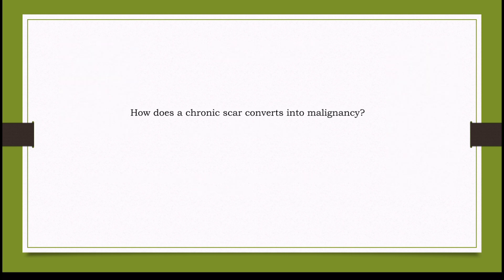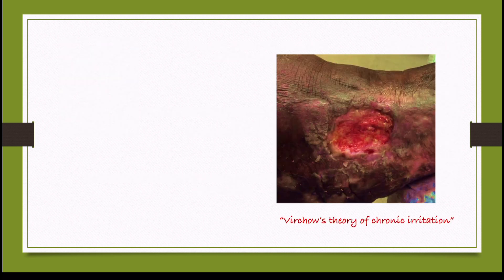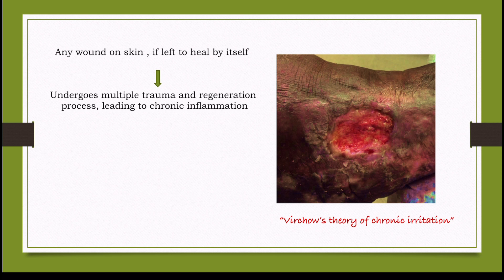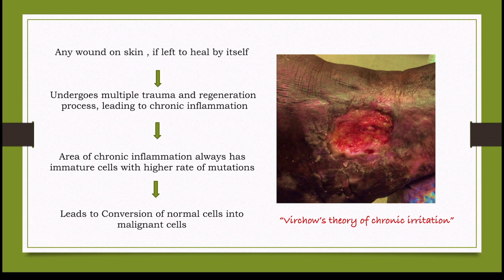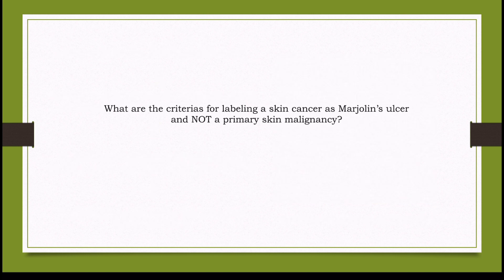How does a chronic scar convert into malignancy? Any wound on skin, if left to heal by itself, undergoes multiple cycles of trauma and regeneration, leading to chronic inflammation. Areas of chronic inflammation always have immature cells with higher rates of mutations, which leads to chances of conversion of normal cells into malignant cells.